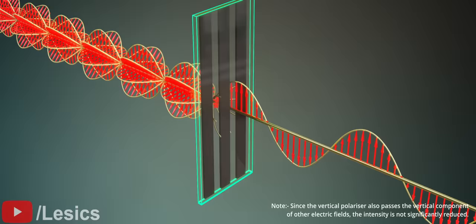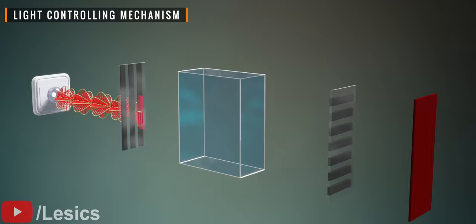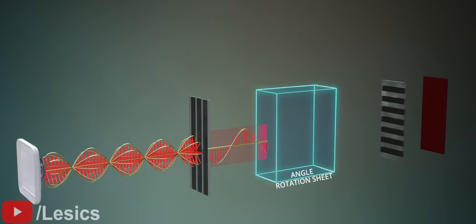Now, let's focus on the light intensity controlling mechanism. When the backlight incident on a vertical polarizer, it will only allow the vertical component of light to pass, blocking out all other components. The role of the angle rotation sheet now comes into play. It's the size of a sub-pixel.